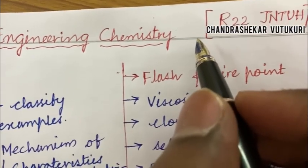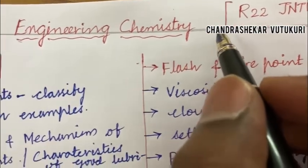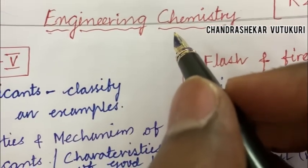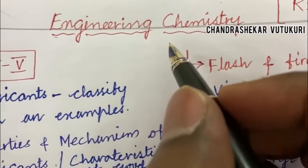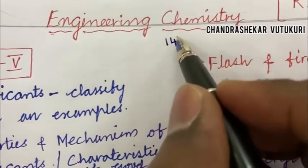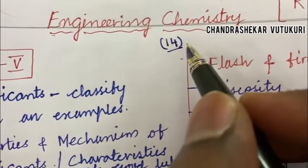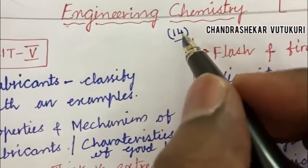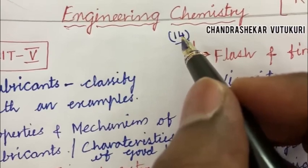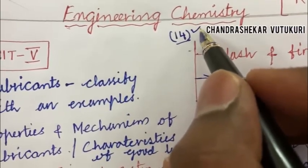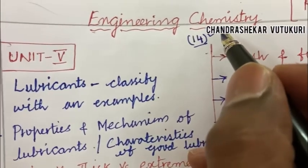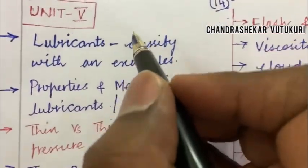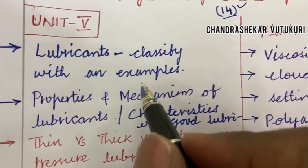Dear students, as per the R22 Regulation, the QP pattern is different and the marking for the external examination is 60 marks. You are eligible to take the external exam if and only if you score 14 marks in the average of Mid 1 and Mid 2. A video is posted in my channel — please go through it and watch for the marking scheme of R22 Regulation. In this video, I am going to highlight a few important questions for the course Engineering Chemistry for all branches of Engineering under JNTU H.